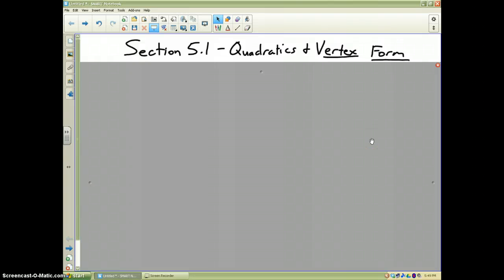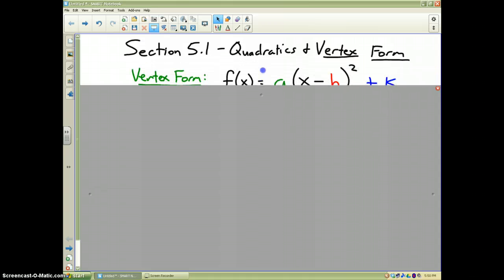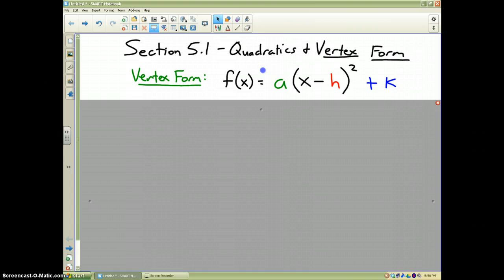The second part of section 5.1 deals with quadratics and vertex form, and actually this is the main topic in section 5.1. There are two types of ways to write quadratic equations. One method is in vertex form, and if you look at this, it looks very similar to our absolute value function.